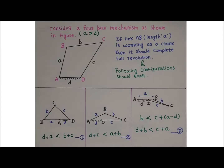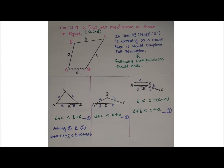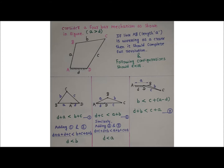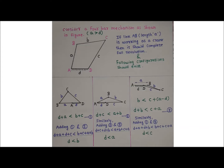Labelling these expressions as 1, 2, and 3: adding expressions 1 and 2, (d + a) + (d + c) < (b + c) + (a + b), cancelling common terms gives d < b. Adding expressions 2 and 3 gives d < a. Adding expressions 1 and 3 gives d < c. Therefore, d is smaller than a, b, and c.